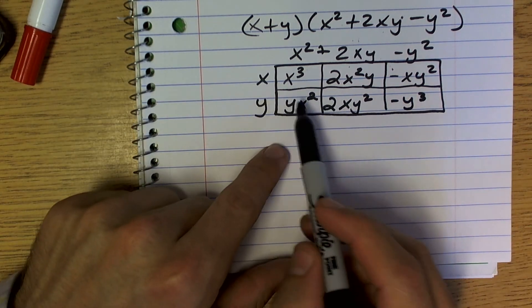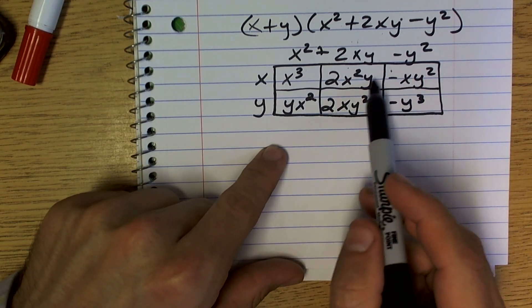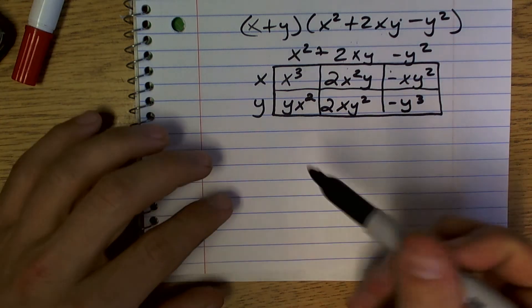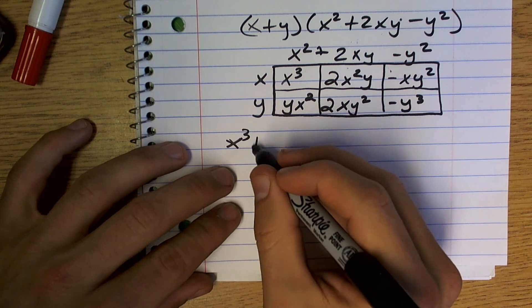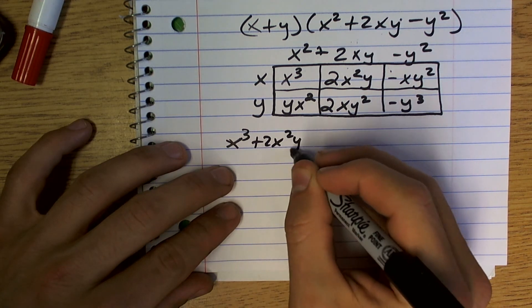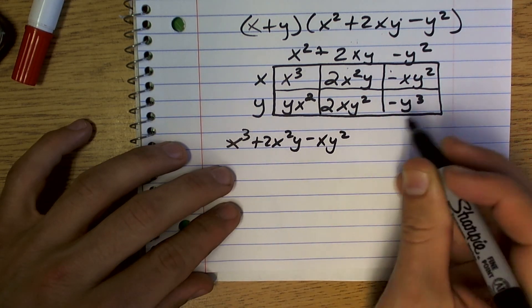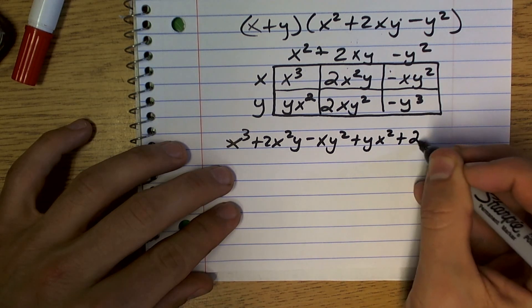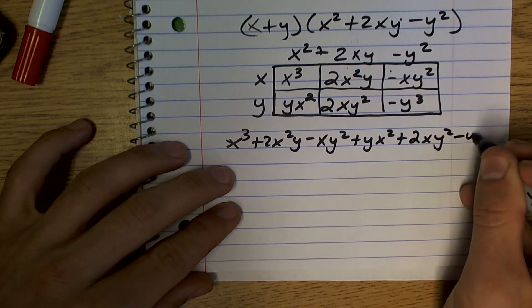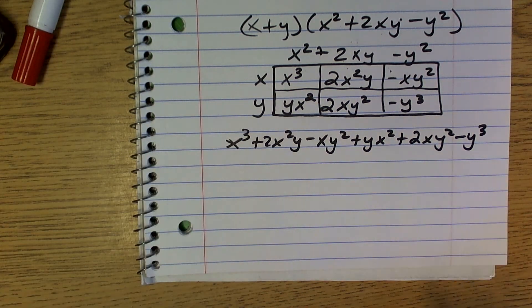Then we look. Do we see any like terms, anything I can combine? No. So then you just write out your answer. x cubed plus 2x squared y minus xy squared plus yx squared plus 2xy squared minus y cubed. All right.